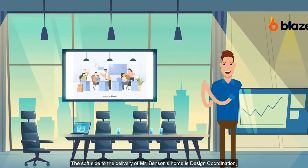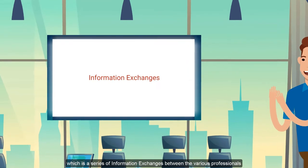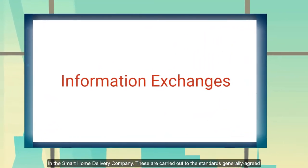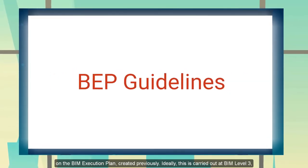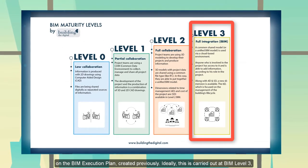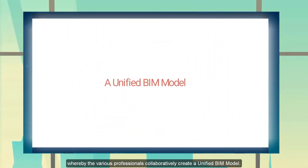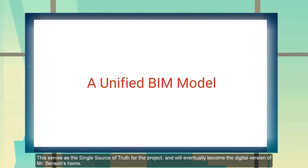The soft side to the delivery of Mr. Benson's home is the design coordination, which is basically a series of information exchanges among the various professionals found in the smart home delivery company. This is typically done to the bill execution planning guidelines and standards that are set up in the initial step. And this ideally should also be carried out at BIM Level 3, whereby the various professionals come together and collaboratively generate a unified BIM model that serves as a single source of truth for the project.